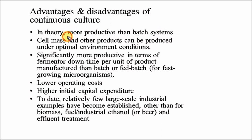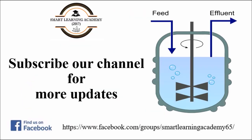The advantages of continuous culture include higher productivity, optimal environment conditions, and significantly lower downtime per unit of product compared to batch or fed-batch, as well as lower operating costs. The disadvantages include higher initial capital expenditure and relatively few large-scale industrial examples of chemostats or CSTRs. This concludes the discussion of chemostat operations including biomass production, substrate utilization, product formation, washout condition, and optimal dilution rate. Remember all the formulas to solve related numericals.